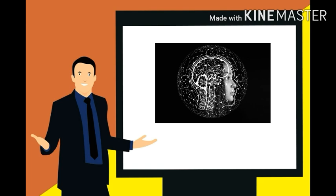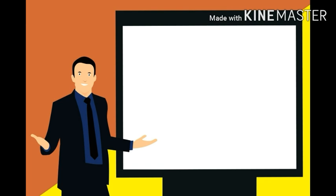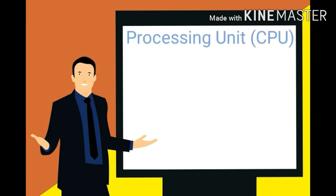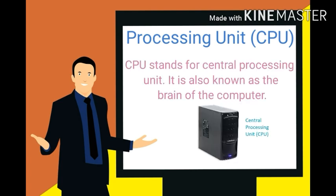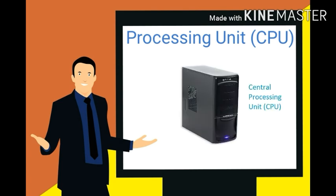Our brain controls all the parts of our body. Like that, there is one part that controls all the other parts of a computer system, and that is called the processing unit. CPU stands for Central Processing Unit. It is also known as the brain of the computer. It is one of the important parts of the computer. CPU processes the input data and gives the result through the output device.